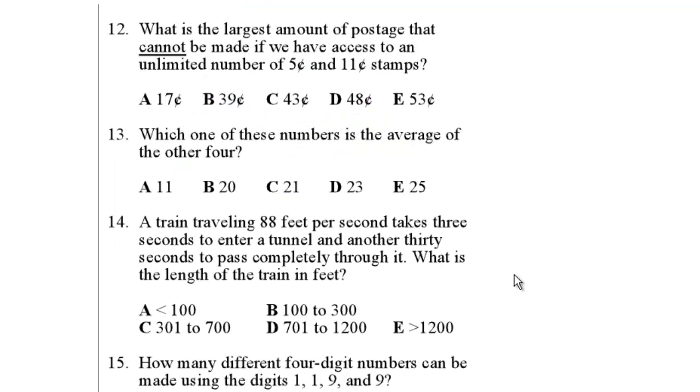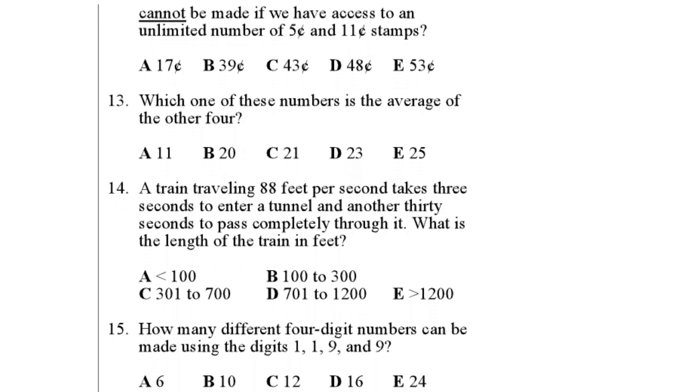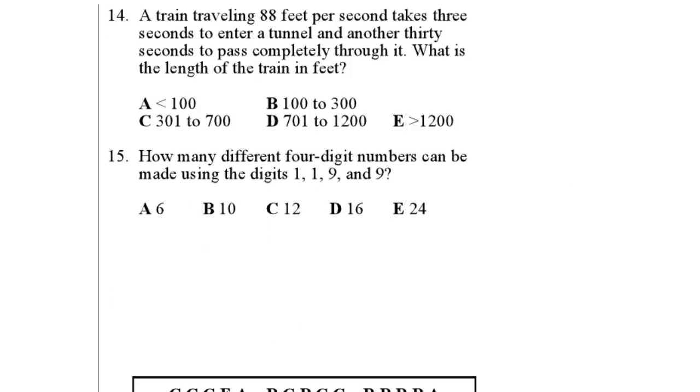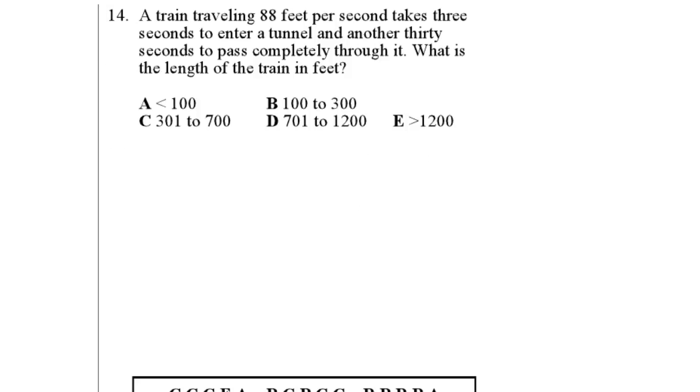Practice problems number 2, let's do question number 14. A train traveling 88 feet per second takes 3 seconds to enter a tunnel and another 30 seconds to pass completely through it. What is the length of the train? Whenever you have speed and then you have length and you have time, there's only one relationship we know which is speed equals distance over time. Now, the train travels at 88 feet per second. That's the speed. And it takes 3 seconds to enter then 30 seconds to pass. So my time is not just one number. We need to draw this to make sure that we get it right.